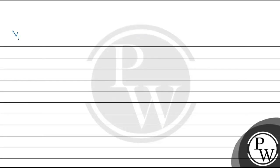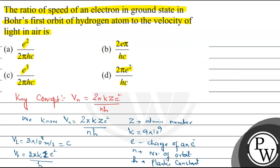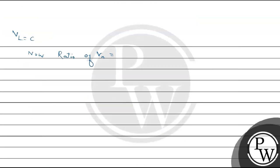vL equals c. Now we need to find the ratio of vn, that is the velocity of the electron in the nth orbital - for hydrogen we can write vn1 - upon velocity of light.